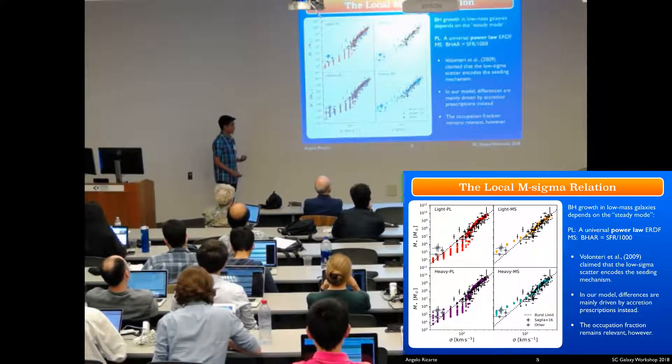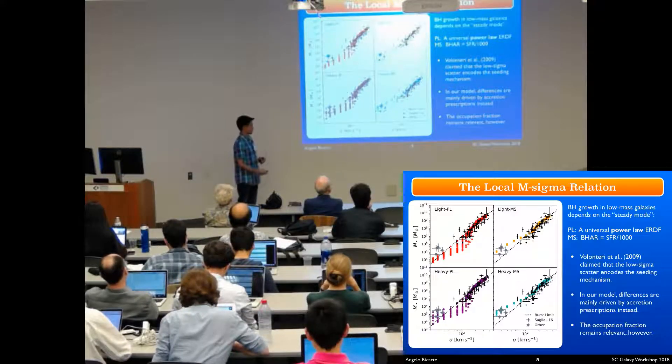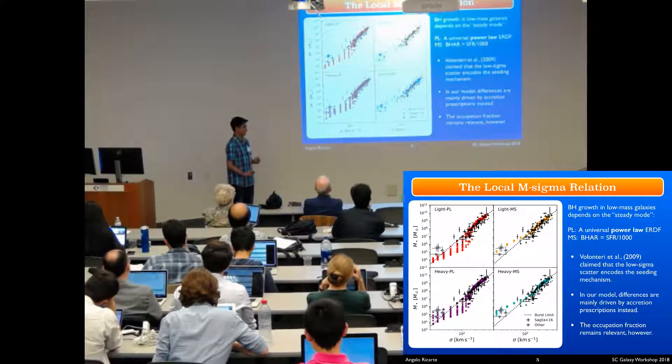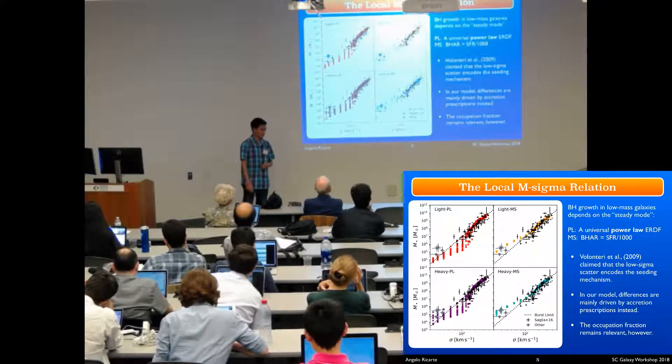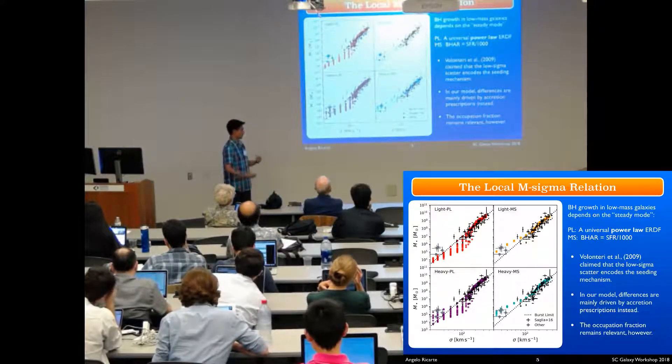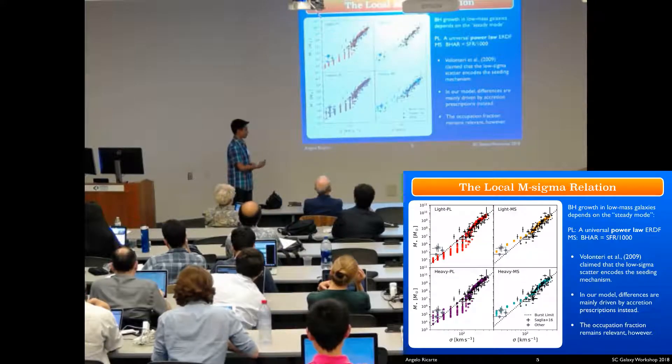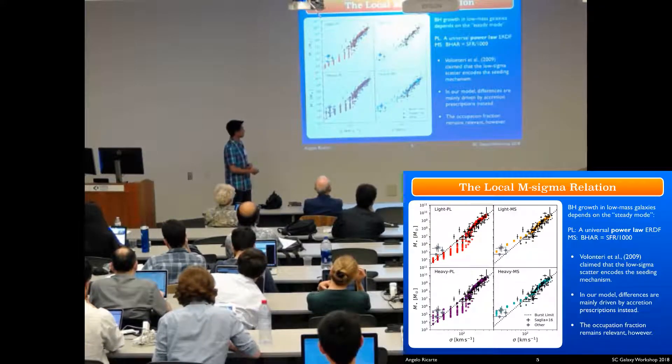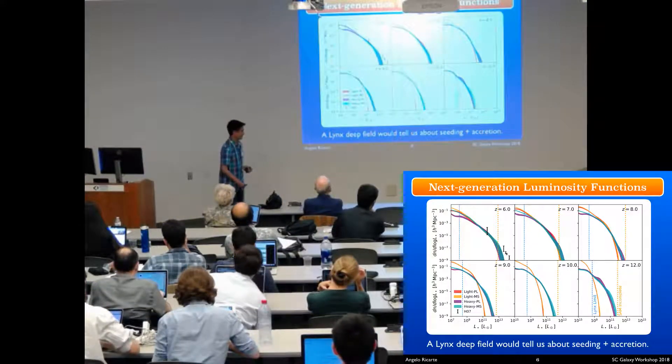However, the occupation fraction, the fraction of points which end up on this plot at all, still remains relevant, although that's much more difficult for an observer to measure than for a theorist to predict from merger trees.